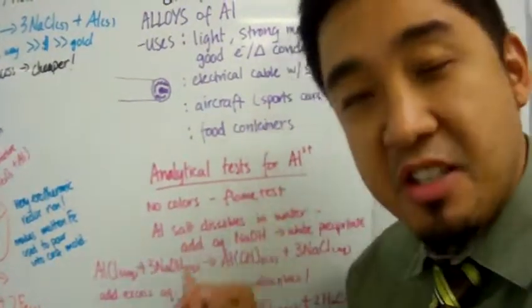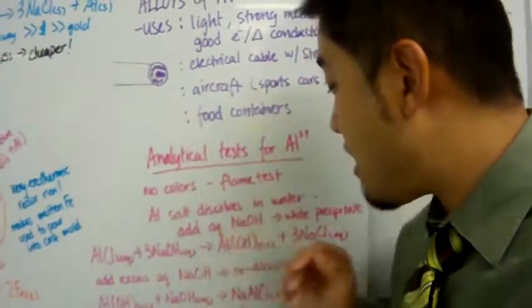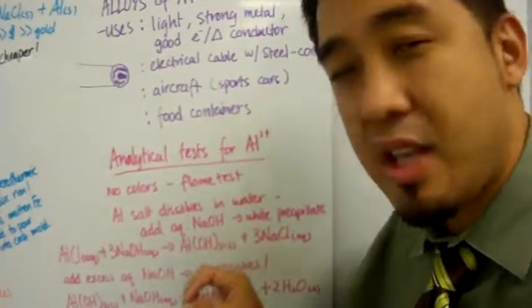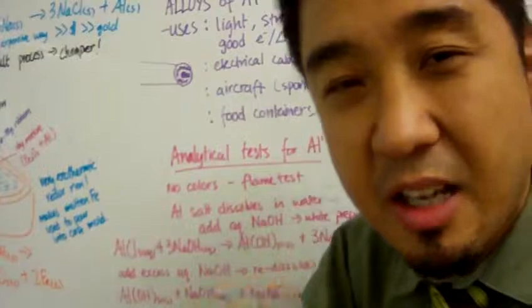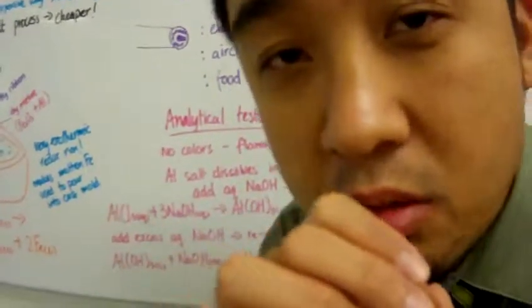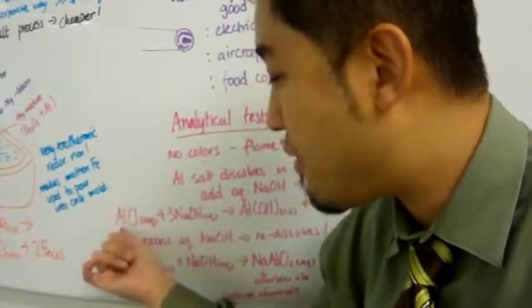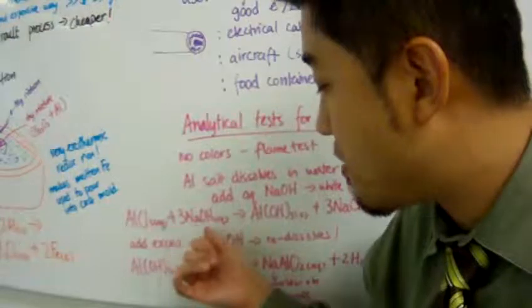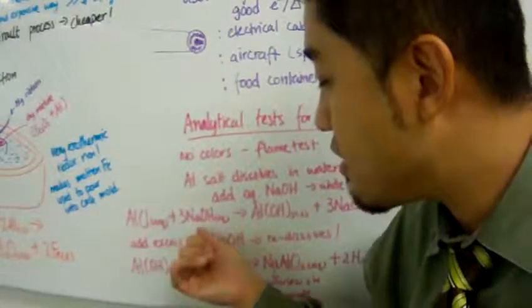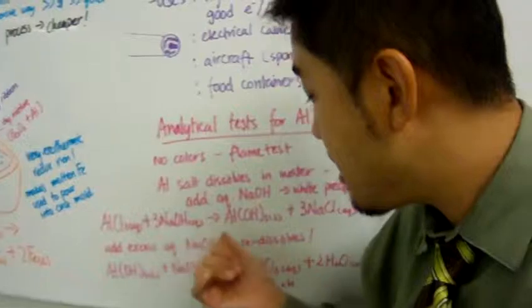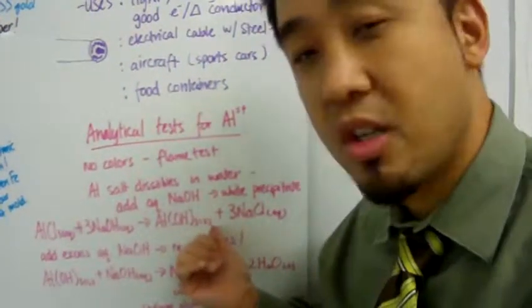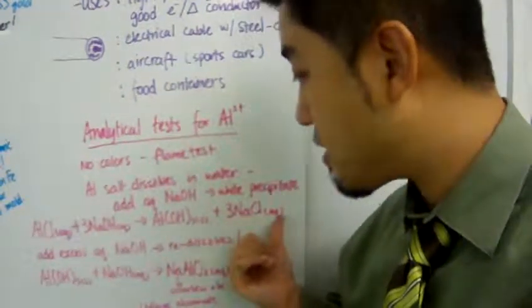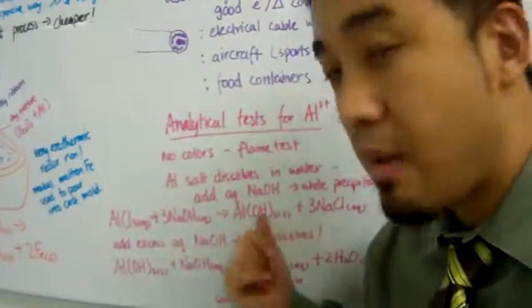However, aluminum salts do dissolve in water. When it dissolves in water, we can add sodium hydroxide—a little bit of sodium hydroxide. When we add it, it forms a white precipitate. Let's have aluminum chloride as an example. When you add sodium hydroxide to that, you form aluminum hydroxide, which is insoluble and is a white precipitate, and you get sodium chloride as a byproduct.